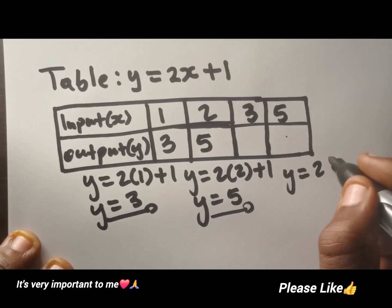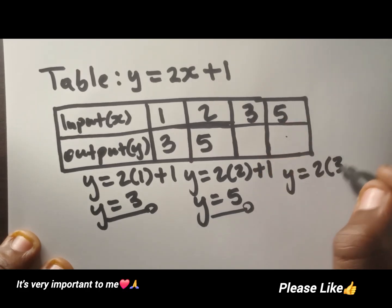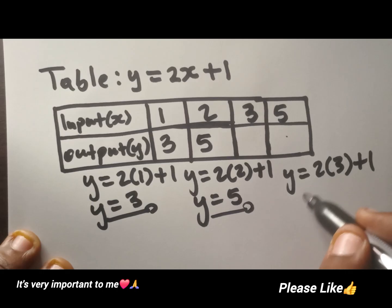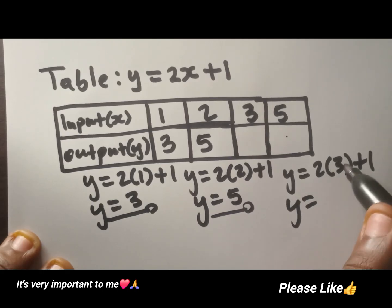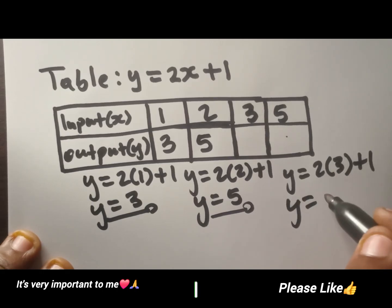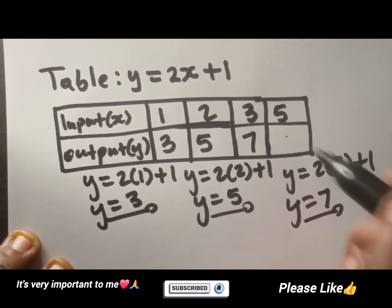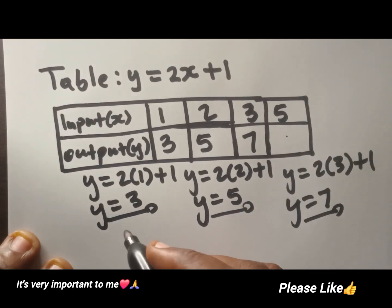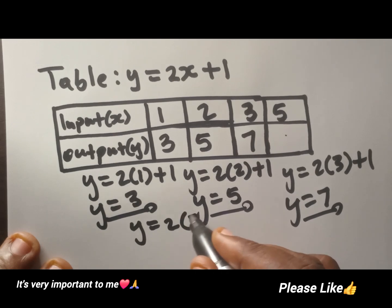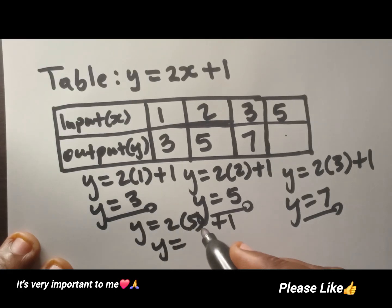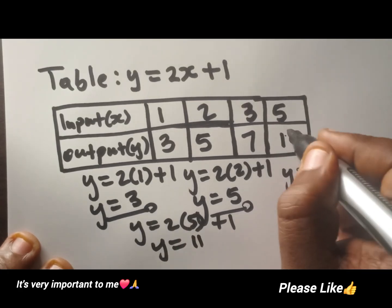There is x there, and then we put 3 plus 1. This is going to be 2 times 3 is going to be 6, plus 1 is going to be 7. So we have 7 here. The last one is going to be 2 times 5 plus 1 — 2 times 5 is going to be 10, plus 1 is going to be 11. So we have 11 here.